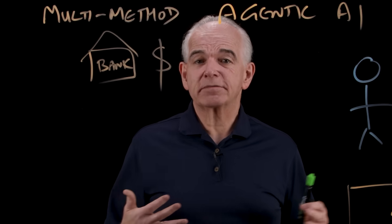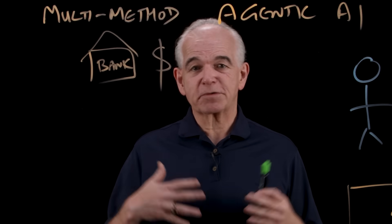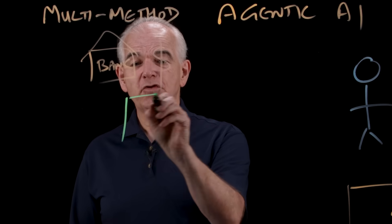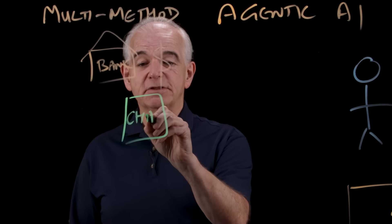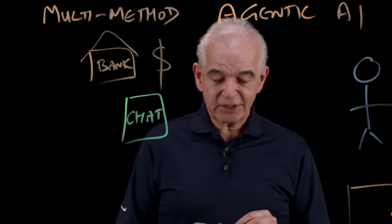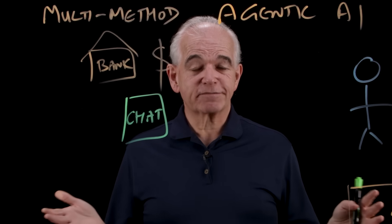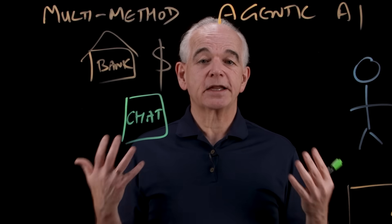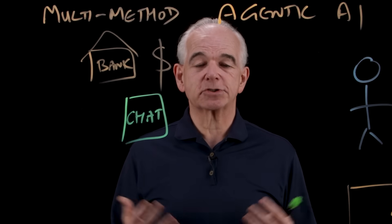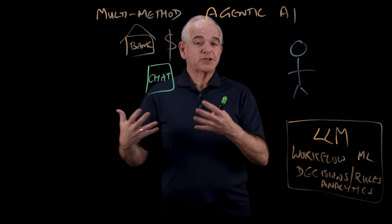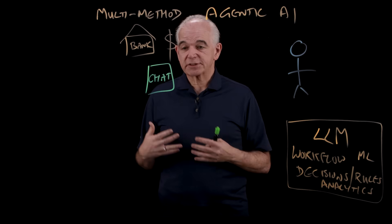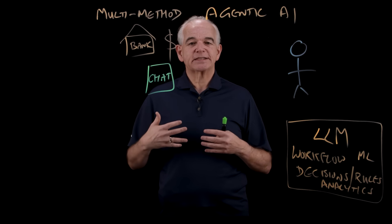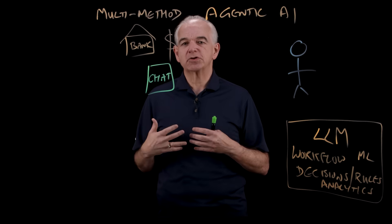The customer doesn't want to use traditional systems anymore. They don't want to sit in front of a long form and fill out all these details — they want to have a conversation. So first and foremost, I'm going to need some kind of chat agent they can talk to. A chat agent is a classic use case for a large language model. They work great — really good at understanding what you're saying, your intent, the voice you use, speaking different languages, and so on. So a chat agent is going to be a large language model agent.